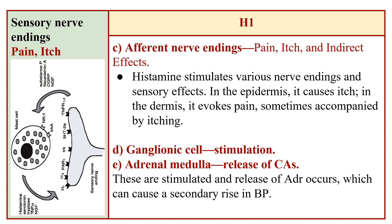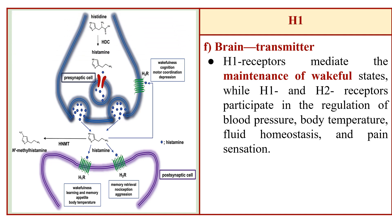In sensory nerve endings, histamine produces pain and itch. It stimulates various nerve endings: in the epidermis it causes itching, and in the dermis it evokes pain. Ganglionic cell stimulation occurs, and in the adrenal medulla, release of catecholamines — adrenaline — occurs, causing a secondary rise in blood pressure. In the brain, histamine works as a neurotransmitter; activation of H1 receptors maintains the wakeful state, while H1 and H2 receptors participate in regulation of blood pressure, body temperature, fluid homeostasis, and pain cessation. Anti-histaminics will induce sleep.